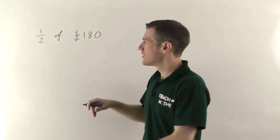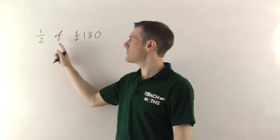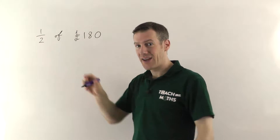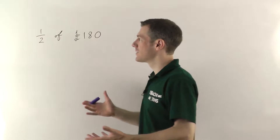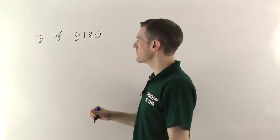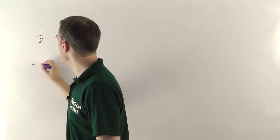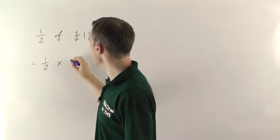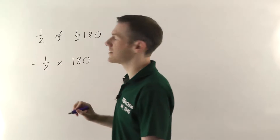Now there's one important thing to remember in maths generally: whenever you see the word 'of', it always means times. So in this case, if you need a half of 180 pounds, what we're actually trying to figure out is what a half times 180 is.